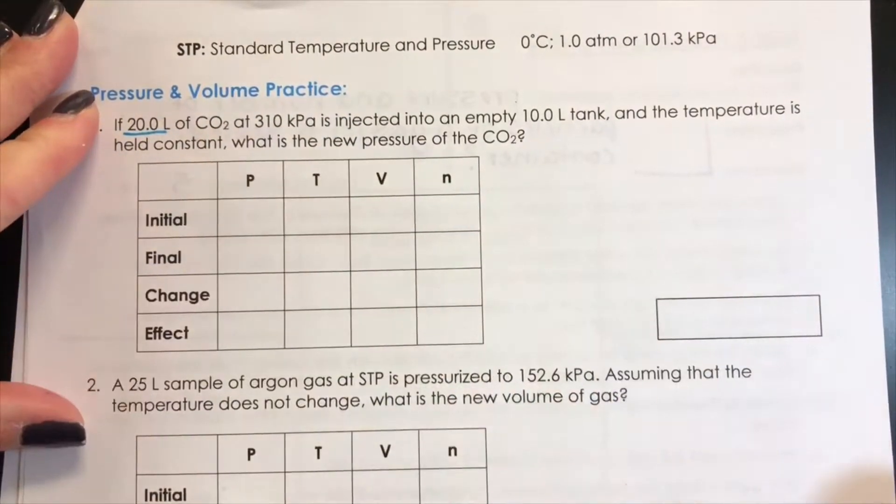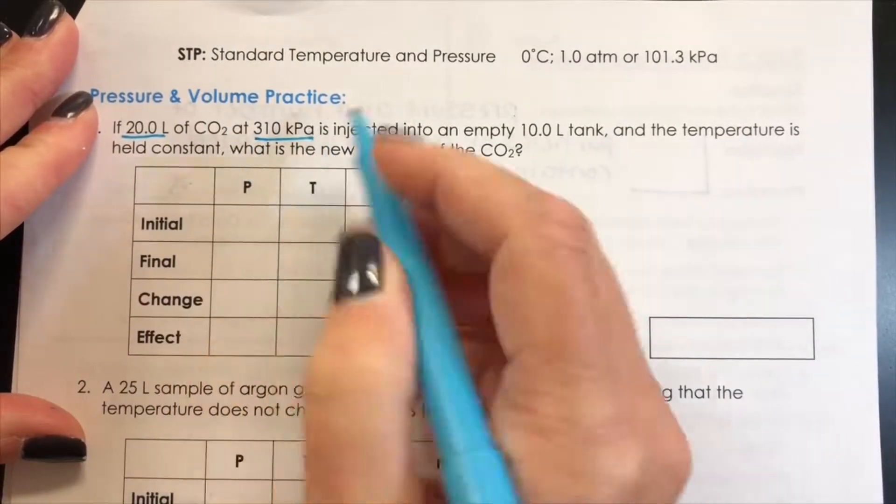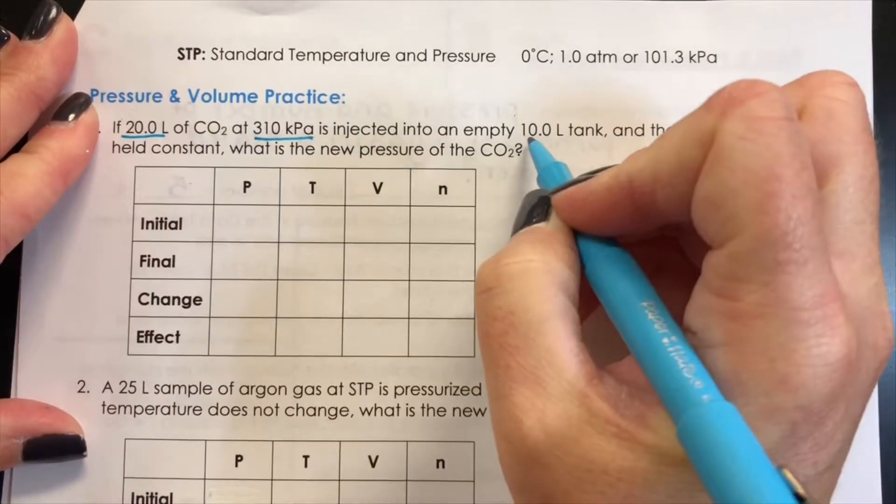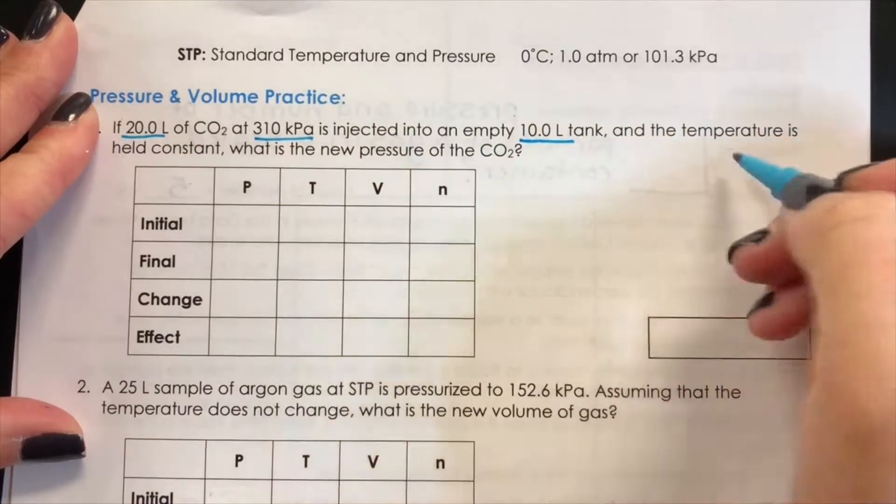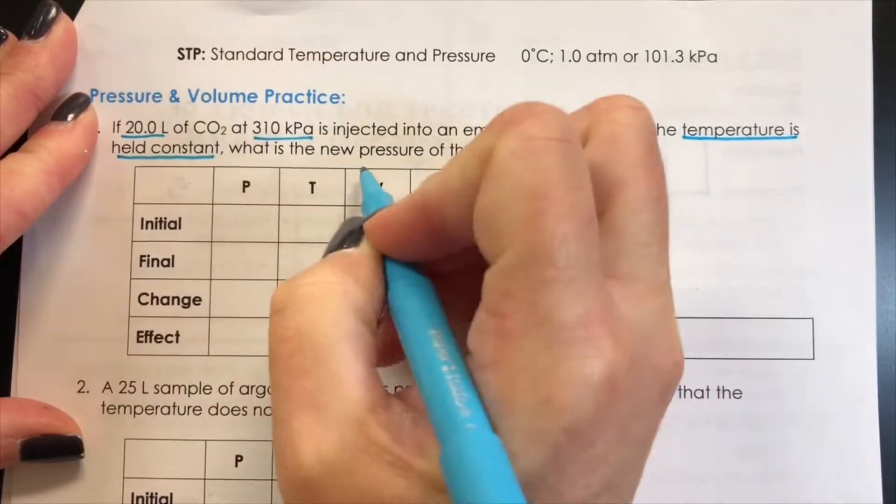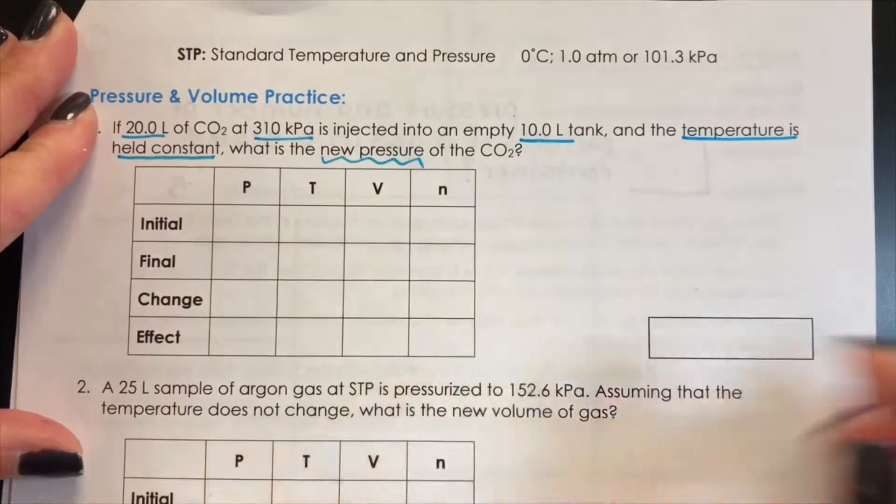If 20 liters of carbon dioxide at 310 kPa is injected into an empty 10 liter tank and the temperature is held constant, what is the new pressure of the carbon dioxide?